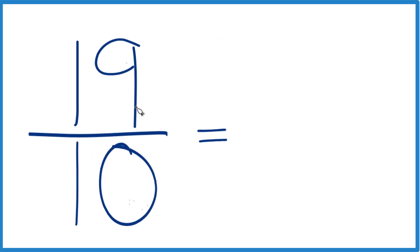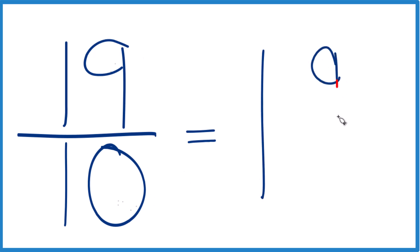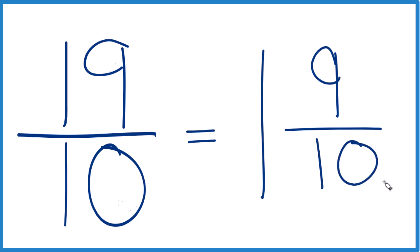So 10 goes into 19 just one time, because 1 times 10 is 10. We'd have 9 left over, and then we bring the 10 across. 19 tenths equals 1 and 9 tenths.